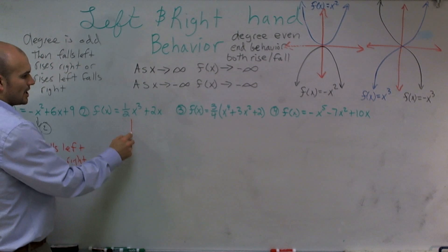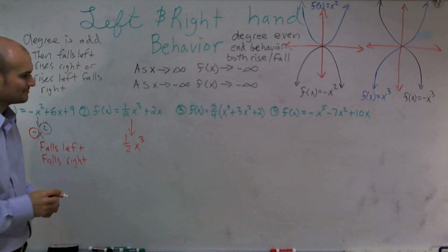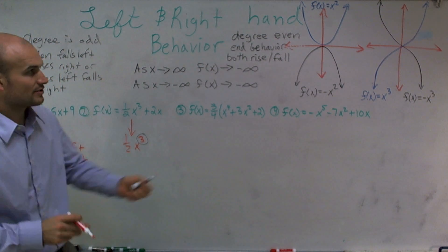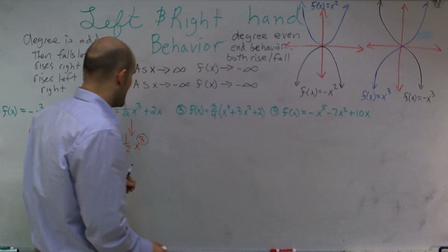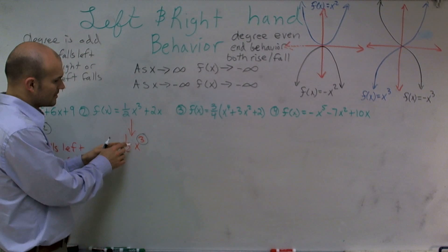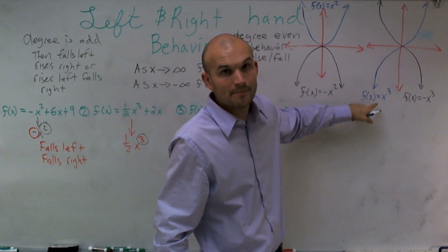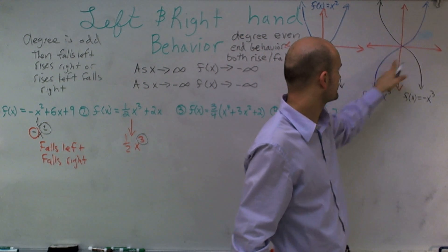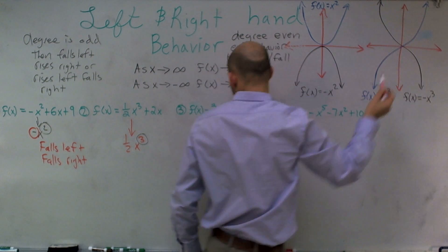For the next problem, I take down the leading term which is one-half x cubed. Since we have an odd degree, it's going to be one of my odd graphs. The leading coefficient is positive, so it's going to look like f of x equals x cubed. Therefore my graph is going to fall to the left and rise to the right.